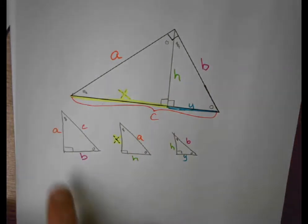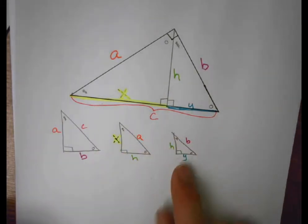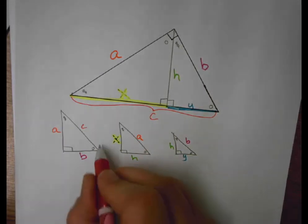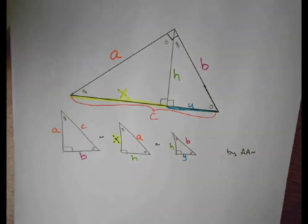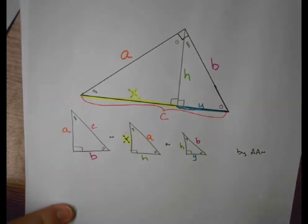Because each of these triangles has the three same angles, I can say that all three of these triangles are similar by angle-angle similarity. And of course, that means that if they're similar, that I can create proportions of sides.